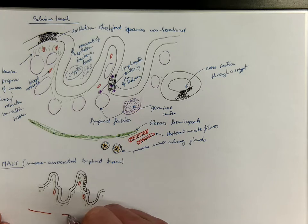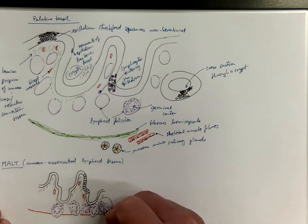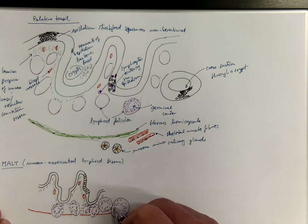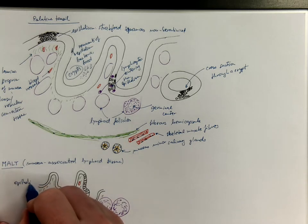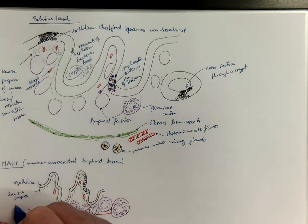But sometimes the lamina muscularis is not continuous because there are the lymphoid follicles here. Some of them are solitary accumulations of lymphocytes and some of them could be even aggregated. This will be the epithelium, this will be the lamina propria, this will be the lamina muscularis.